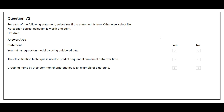Question number 72. For each of the following statements, select Yes if the statement is true, otherwise select No. Statement one: You train a regression model by using unlabeled data. The correct answer is No. Statement two: The classification technique is used to predict sequential numerical data over time. The correct answer is No. Statement three: Grouping items by their common characteristic is an example of clustering. The correct answer is Yes.